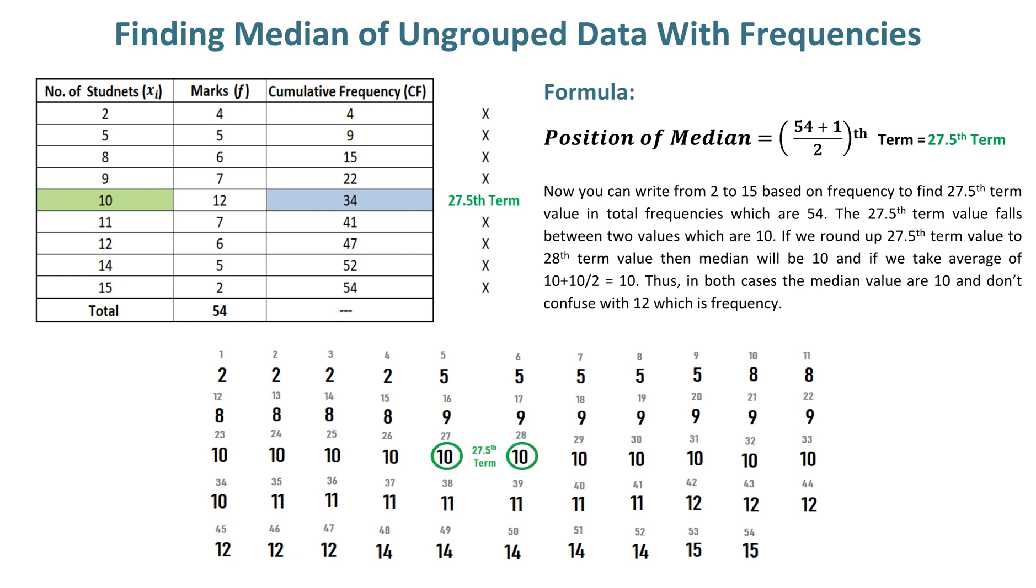In the exam hall, avoid such lengthy calculations. An important tip: you can look at the cumulative frequency of 34, which means after the 22nd term value, we are just 6 term values of 10 away from 27.5. There are 12 values of 10.